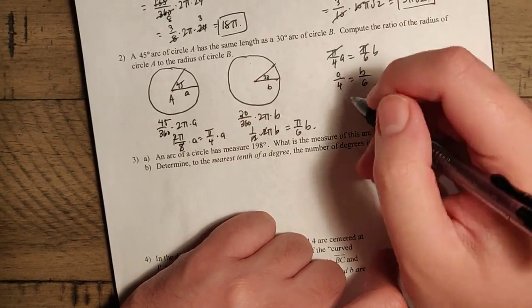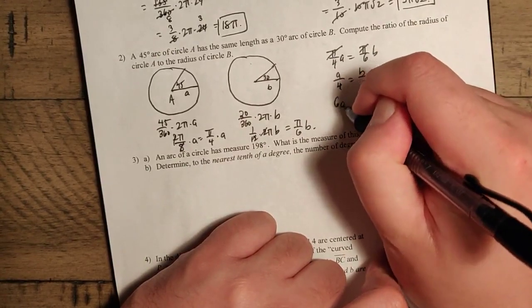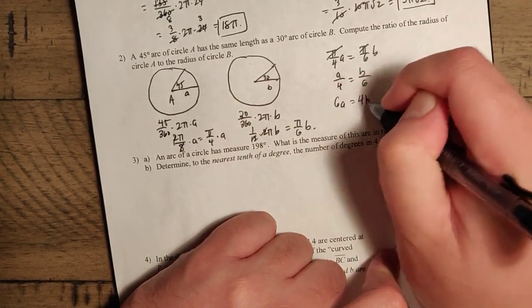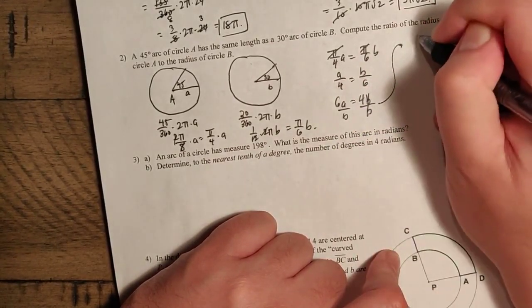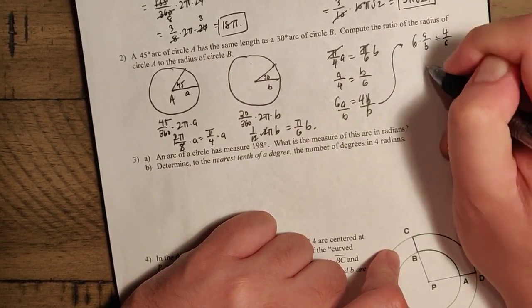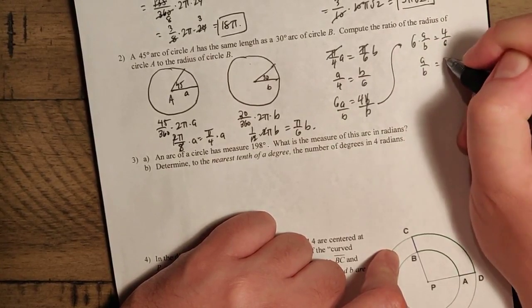We want to find A over B. So in this case we can just cross multiply. We get 6A equals 4B. And then we can divide by B on both sides. So this goes away. And we're left with 6 times A over B equals 4.